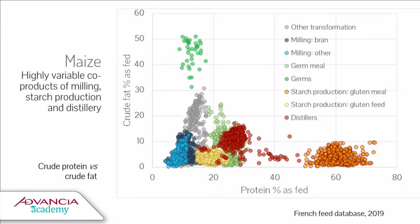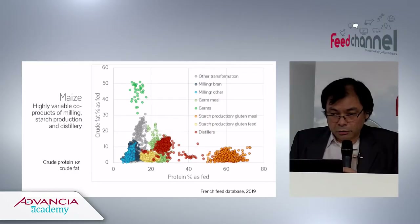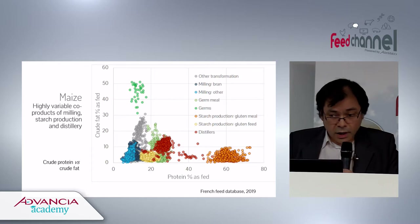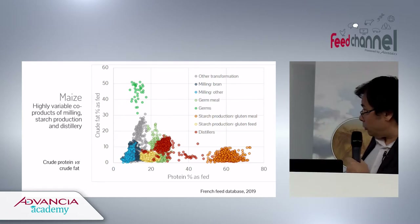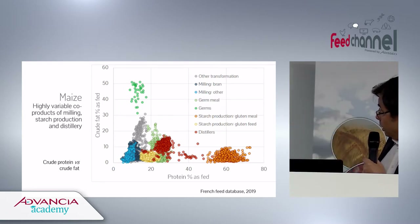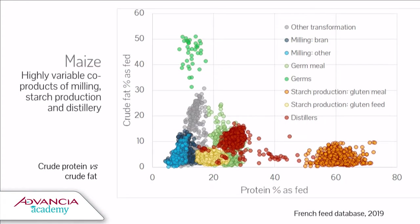If we take maize and all its by-products, there is a huge diversity of products coming from a single grain, and every single co-product is itself variable. For example, looking at gluten meal on the right — protein versus fat — gluten meal is nominally 60% protein, but in fact ranges between 50 and 70%.